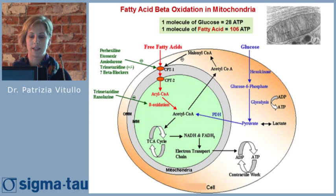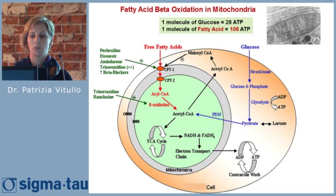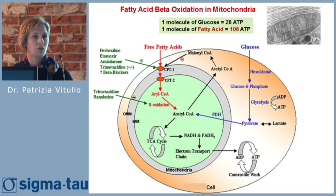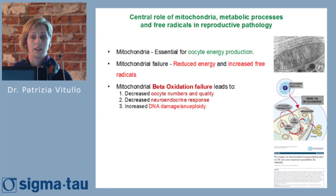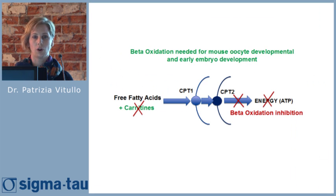Mitochondria are the central player in the metabolic process because they have a key role in different cellular processes, most of all in producing energy. This schematic view shows that carnitine acts to transport the active form of fatty acids through the mitochondrial membrane, where the beta-oxidation reaction takes place. If there is no beta-oxidation reaction and no carnitine, the consequence is no production of energy.